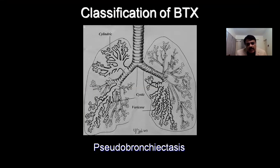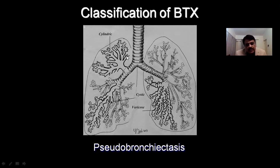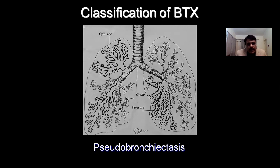Bronchiectasis morphologically is classified into cylindric — that is important because in cylindric bronchiectasis there is perfusion, and here there is no role of surgery — as opposed to cystic and varicose bronchiectasis where there is no perfusion. These patients are the ones which benefit from surgery.